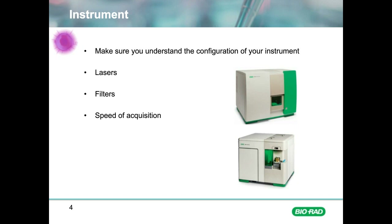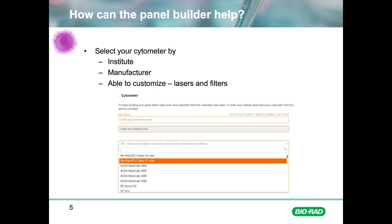The panel builder offers two options for instrument selection. You can search by your institute if you have institute-specific cytometers pre-loaded, or select an instrument from most manufacturers from a drop-down menu. Once you select an instrument, you can look at the configuration and check the laser, the filters, and the compatible fluorophores. Furthermore, if you have a custom instrument, you can change the lasers and filters to fit your custom build.